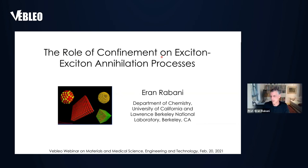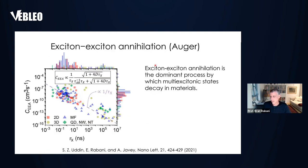I'm going to talk about the role of confinement and exciton-exciton-annihilation processes, and that's exactly exciton-exciton-annihilation as modeled by Auger physics. Exciton-exciton-annihilation is the dominant process by which multi-exciton states decay in different materials. What I'm showing here is a figure where on the y-axis I plot on the logarithmic scale the exciton-exciton-annihilation coefficient as a function, on an analog scale, of the radiative lifetime for various different materials.